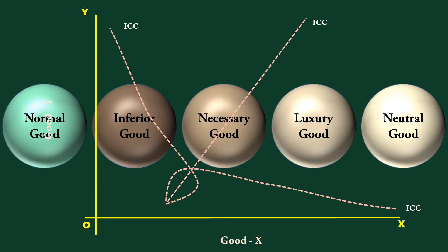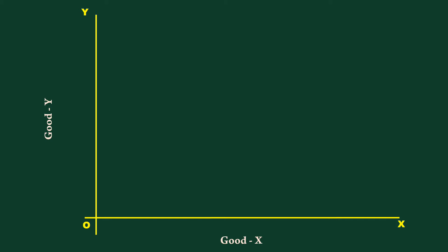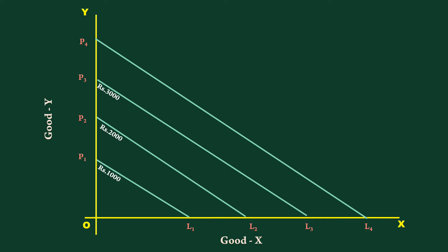Good X is measured along the X axis and good Y along the Y axis. Price lines P1L1, P2L2, P3L3 and P4L4 represent income levels thousand rupees, two thousand rupees, three thousand rupees and four thousand rupees respectively. They are all parallel to one another. It signifies there is no change in the prices of two goods.